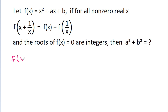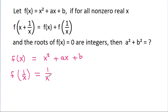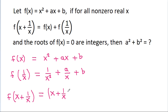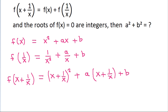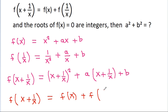So we have f(x) is equal to x squared plus ax plus b. So f(1/x) will be equal to 1/x squared plus a/x plus b. And f(x + 1/x) will be equal to (x + 1/x) squared plus a times (x + 1/x) plus b. And we have given that f(x + 1/x) is equal to f(x) plus f(1/x).